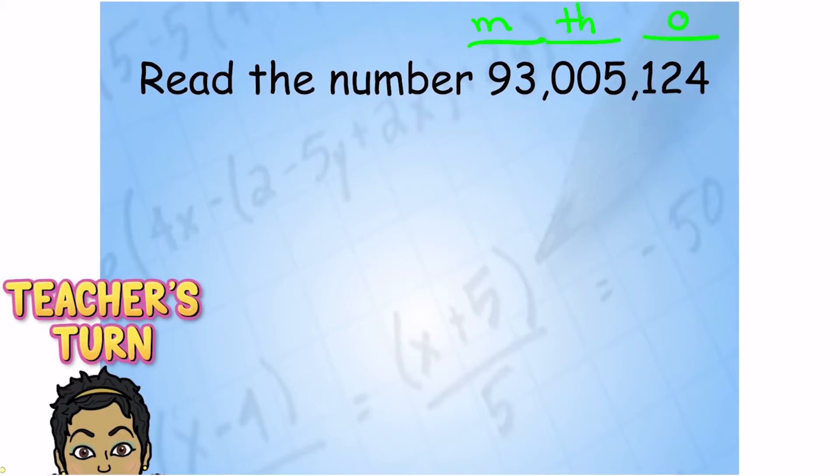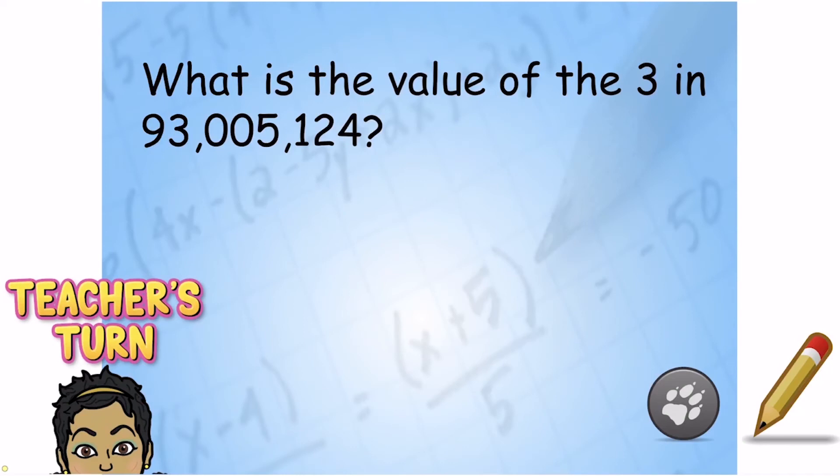So chunk it: 43,005,124. Did you notice how my voice changed there? How in each of these, when I was getting to the end, my voice went up, but when I finished it, my voice went down? So: 124.